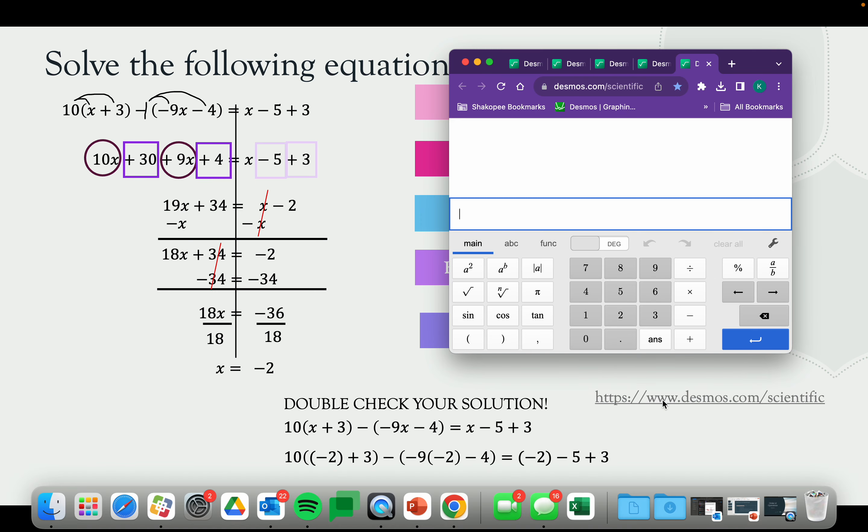So again, there's x's on both sides. So I can go to my scientific calculator. Plug in our negative 2 wherever we see an x. And we get 10 times negative 2 plus 3 minus in parentheses negative 9 times negative 2 minus 4. And that's the end of the left side. So that's this portion. So now we're going to do the right side to see if we end up at negative 4. As you can see, it checks out.